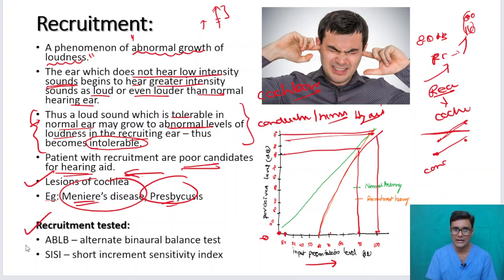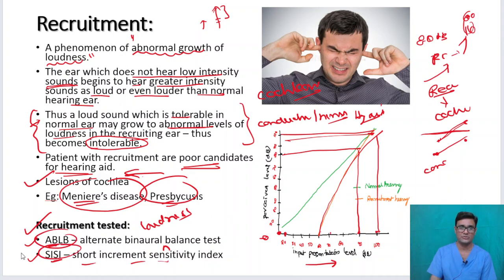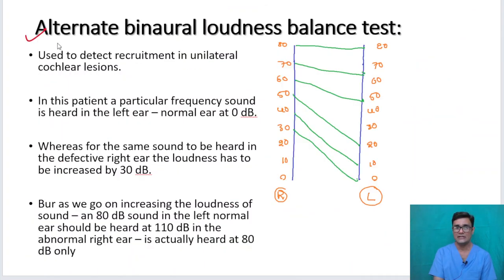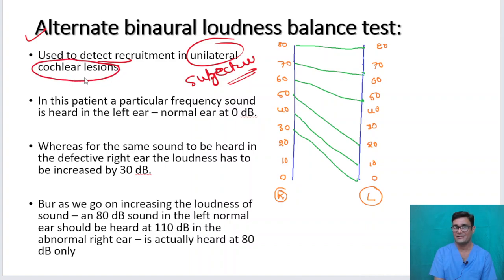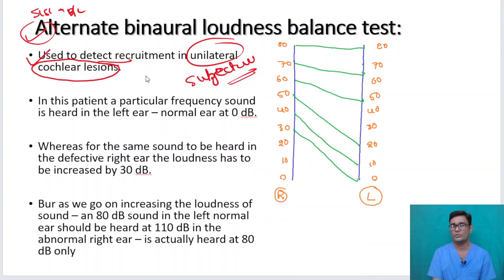How do you test recruitment? Using the ABLB test and the SISI test. ABLB stands for Alternate Binaural Loudness Balance test, and SISI stands for Short Increment Sensitivity Index. Both are subjective tests. The ABLB test is used to detect recruitment in unilateral cochlear lesions only — you cannot use it to detect bilateral cochlear lesions, because you need to compare one ear to the other, and one ear must be normal.